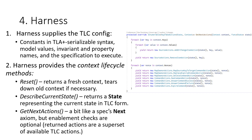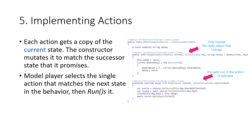The harness is at the core of what the user provides to use Kayfabe. First, it must supply the TLC config, including the constants in TLA+ serializable syntax, any model values or other parameters, and the specification to execute. The harness provides context lifecycle methods: reset to restart the program and get a fresh context, describe current state which returns that TLC state, and get next actions - which is like the spec's Next axiom, but enablement checks are optional. Actions only need to modify the current state to produce the next state; the constructor mutates the current state to match the successor state it promises. The model player then selects the single action that matches the next state in the behavior and calls run, which ensures the program state matches that promised state.